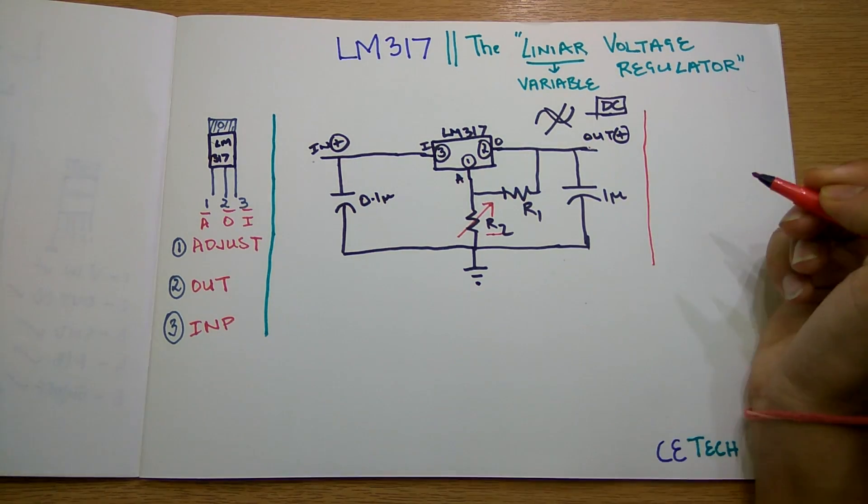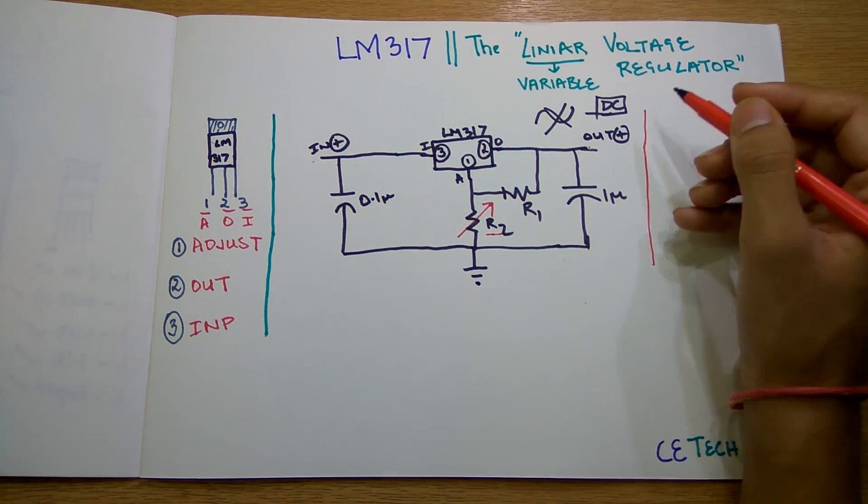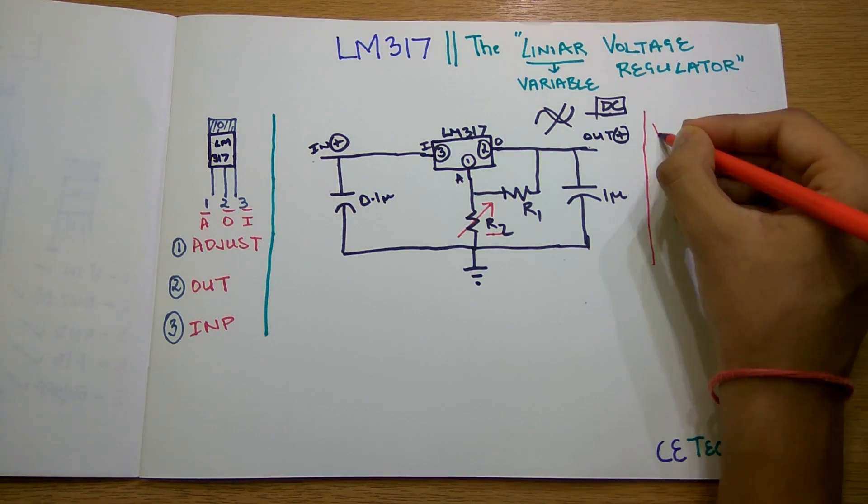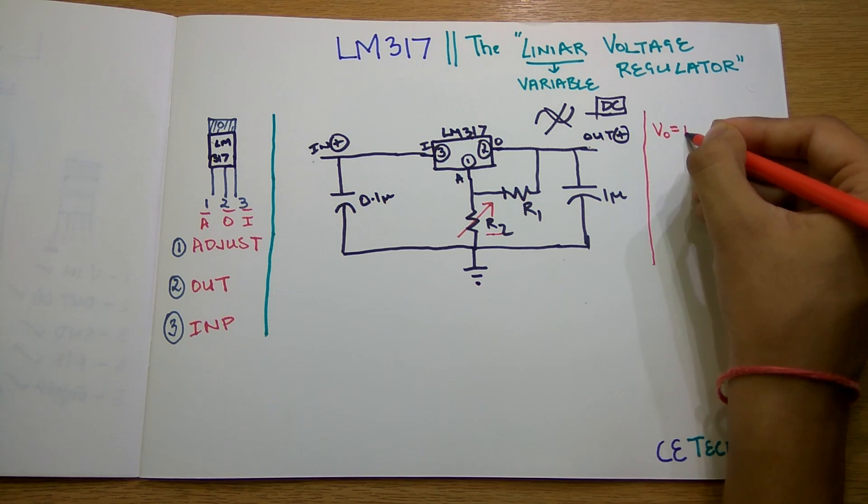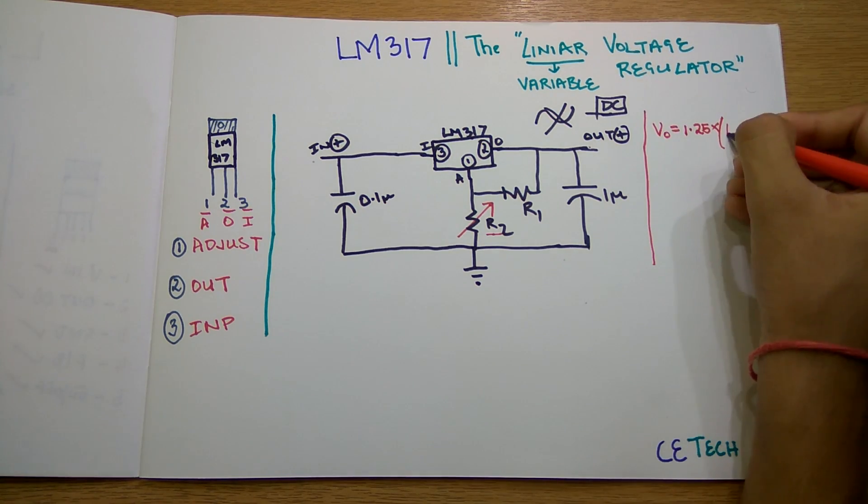Well that's simple. We have a formula defined in the datasheets of the LM317. The formula is: Vout = 1.25 × (1 + R2/R1) + I_adjust × R2.